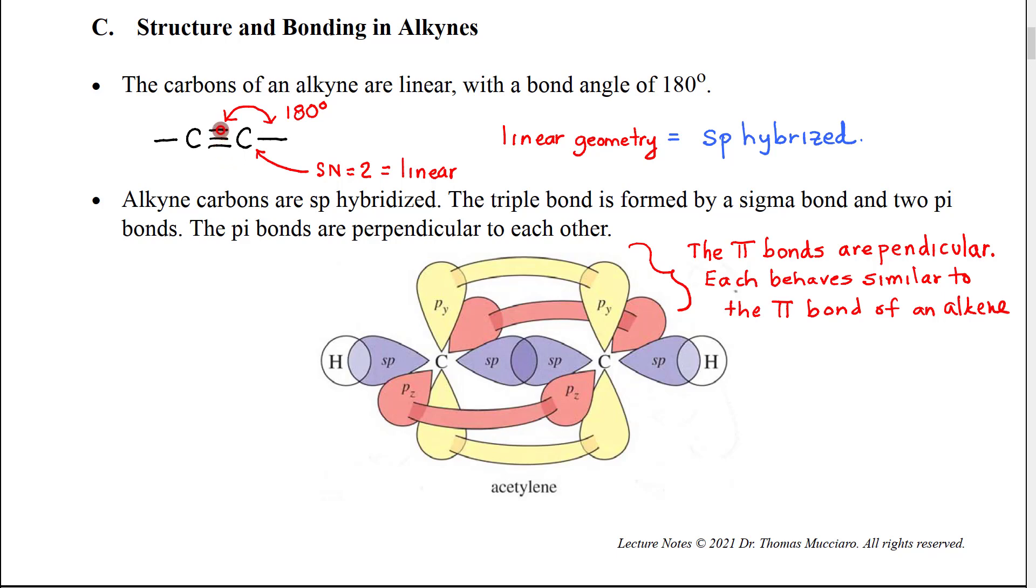because the three bonds, the three pairs of electrons in the triple bond, are all going to function together as one group, and then there'll be another electron group on the other side. Because they have a steric number of two,